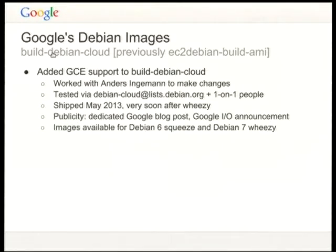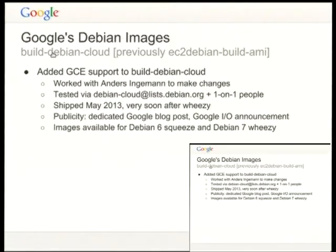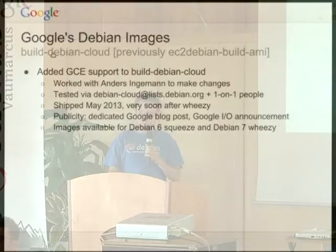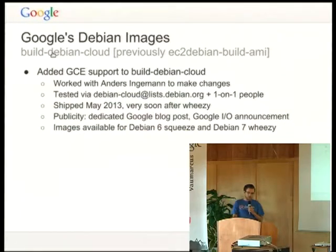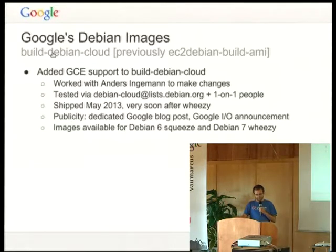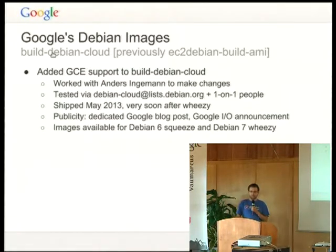We are using a tool to build the Debian images that actually came from the Debian community — we did not create it. The tool at one point supported only Amazon EC2, and we contributed support under the same license back to the community to add support for Google Compute Engine. Accordingly, the name was broadened to Build Debian Cloud. We worked with Andrew Zingerman, who was very helpful, and tested with both the Debian Cloud mailing list and one-on-one interactions.